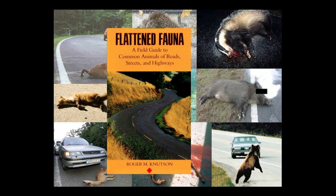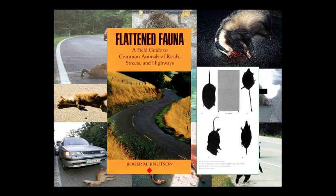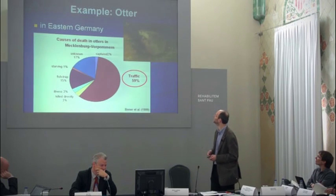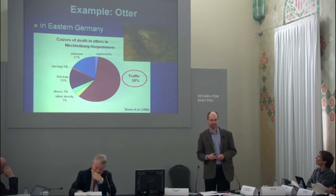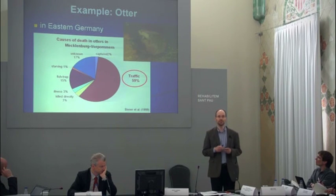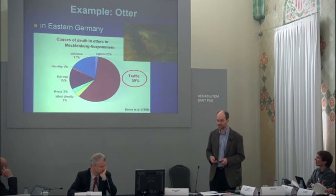Sometimes it becomes difficult to recognize these critters on the road. That's why there is a field guide called 'Flattened Fauna: A Field Guide to Common Animals of Roads, Streets, and Highways,' written with lots of black humor. However, traffic mortality is really important. In Eastern Germany, a study on otters found that almost 60% of otter mortality is caused by traffic — a serious source of threat for many species.